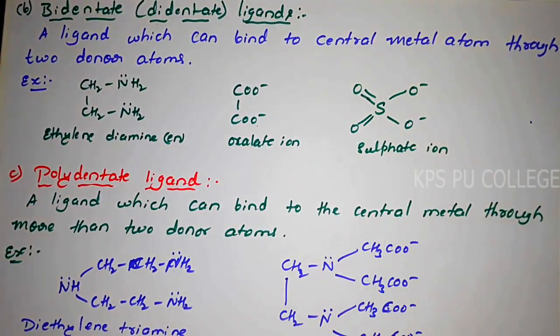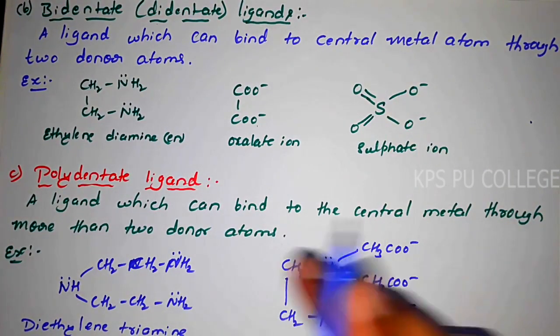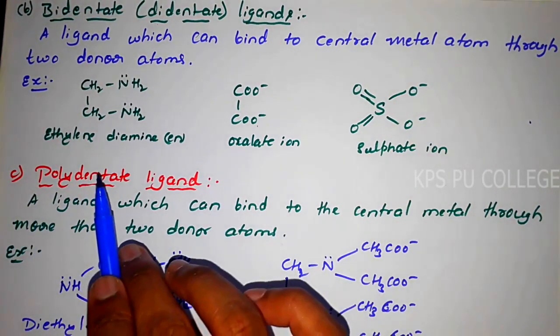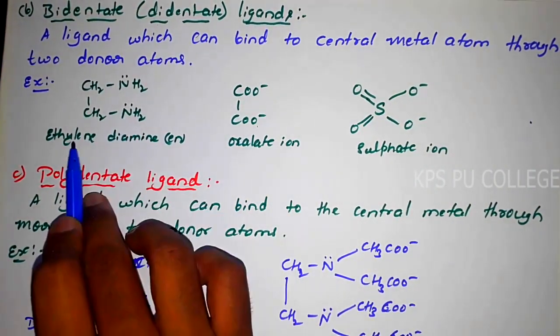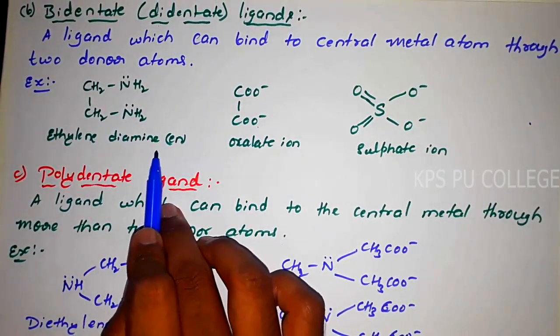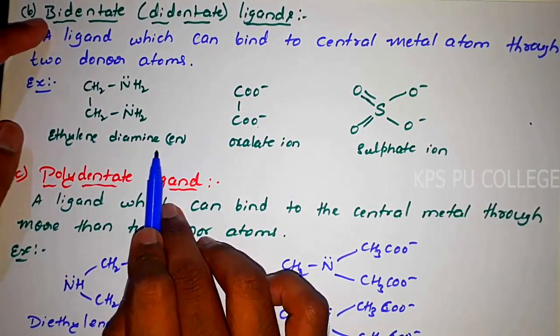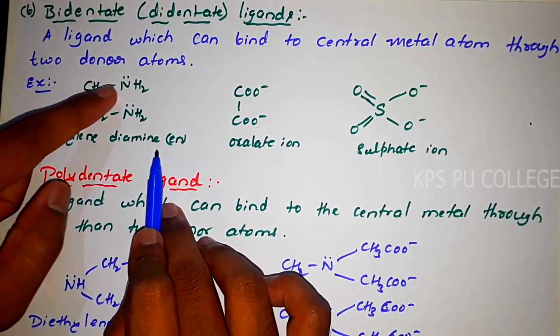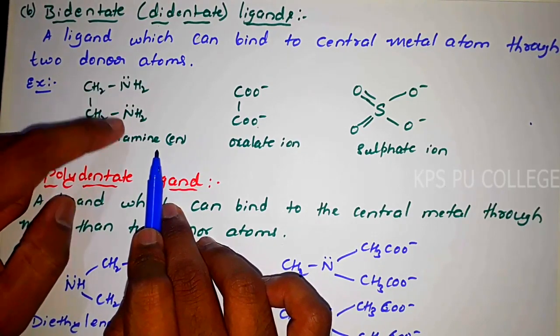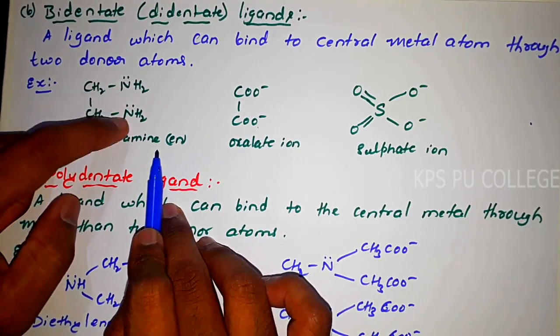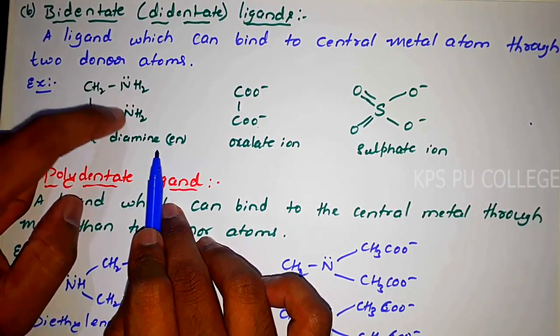It contains two donor atoms linked to the central metal atoms. For example, this is a bidentate ligand because it contains two donor atoms — nitrogen and nitrate. It contains lone pair electrons.